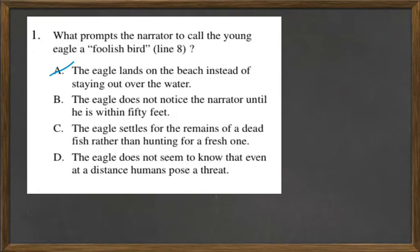Option B: the eagle does not notice the narrator until he is within 50 feet. That one's kind of tricky because that could mean that it's foolish, but it did realize he'd be a threat on the land, so it went up in the air. And also it then lands only 40 feet away, so it's not the distance piece — but B really kind of confused me at first.